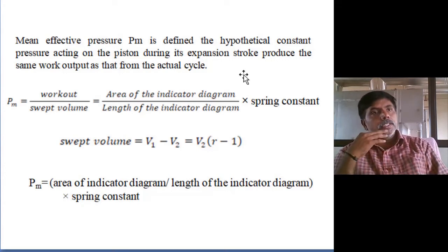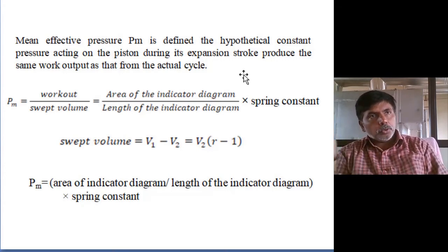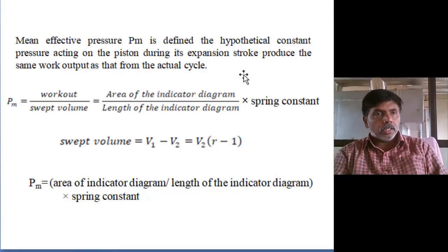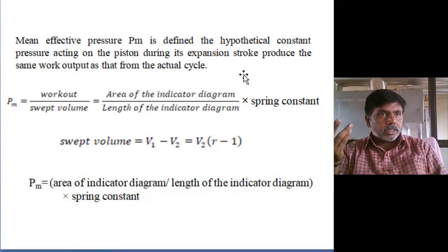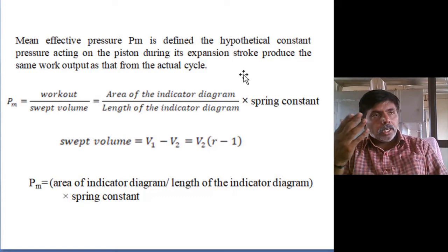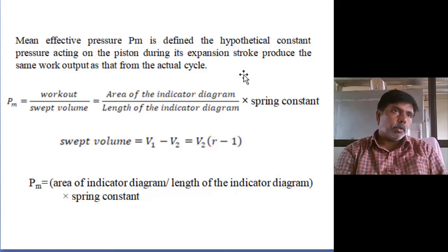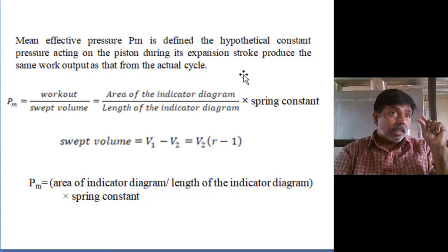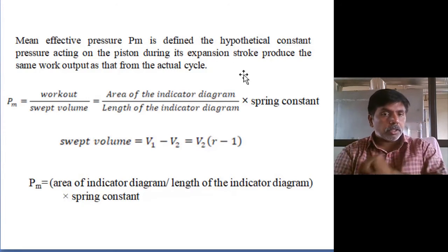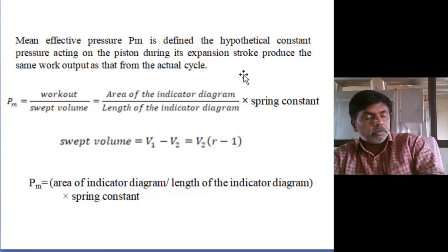Swept volume is pi by 4 D-squared into L — cross-sectional diameter and length of the stroke — giving swept volume, not total volume, because clearance volume also comes into the picture for total volume.